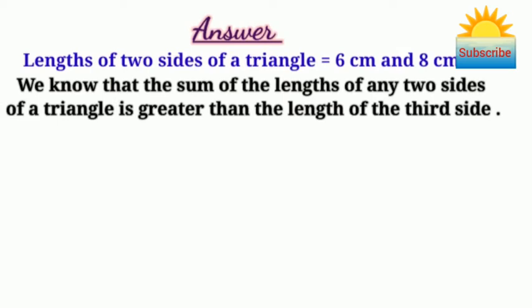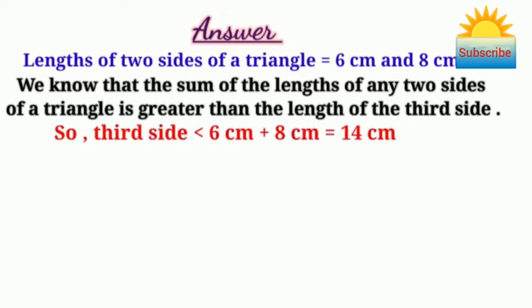We know that the sum of the lengths of any two sides of a triangle is greater than the length of the third side, so the third side has to be lesser than 6 cm plus 8 cm, which equals 14 cm.